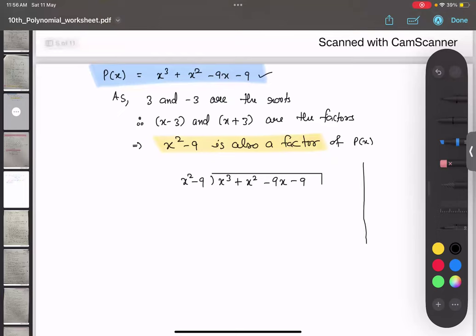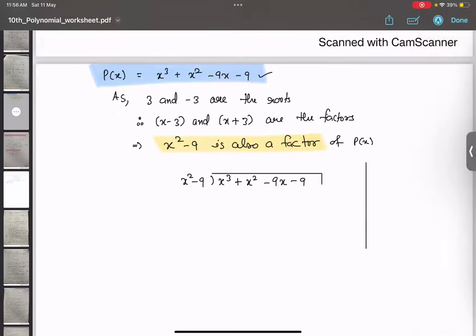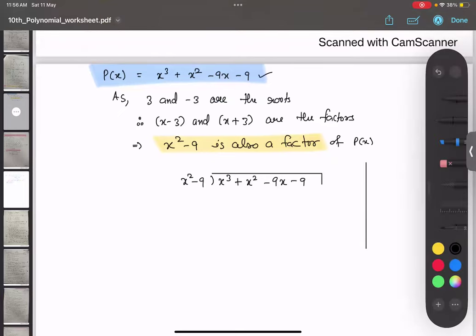So your first step is: take the first number, x³, divided by the first number, you get x. So we multiply by x: x² times x is x³, minus 9 times x is -9x.